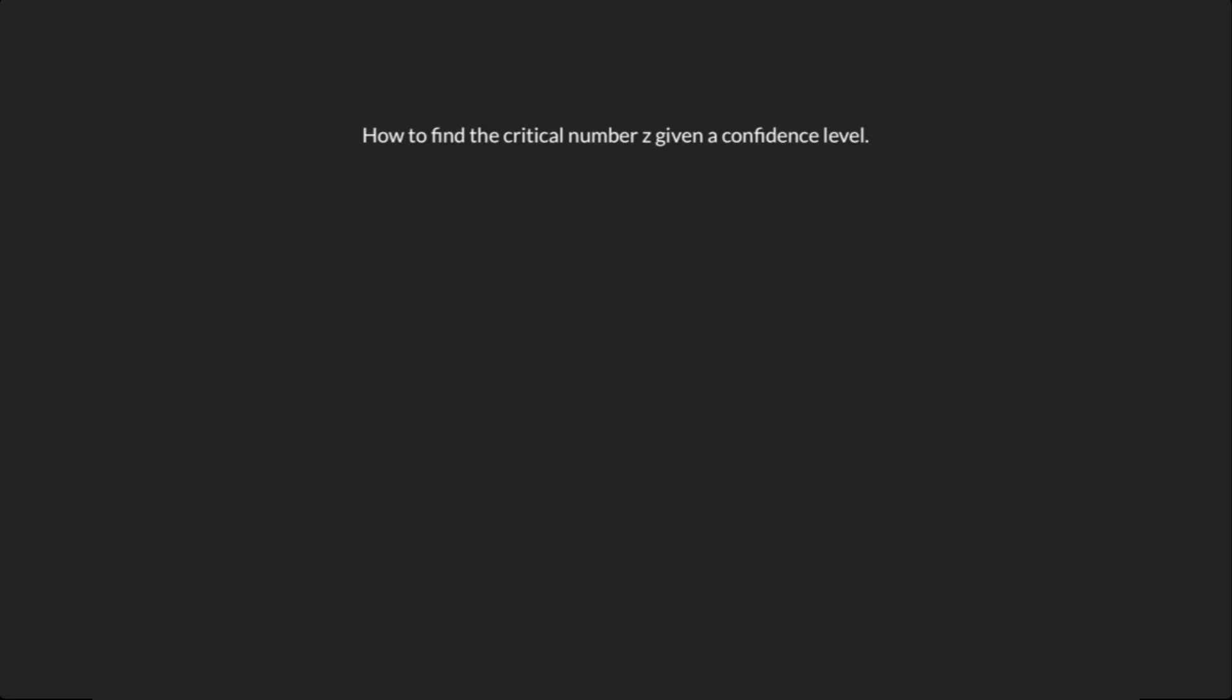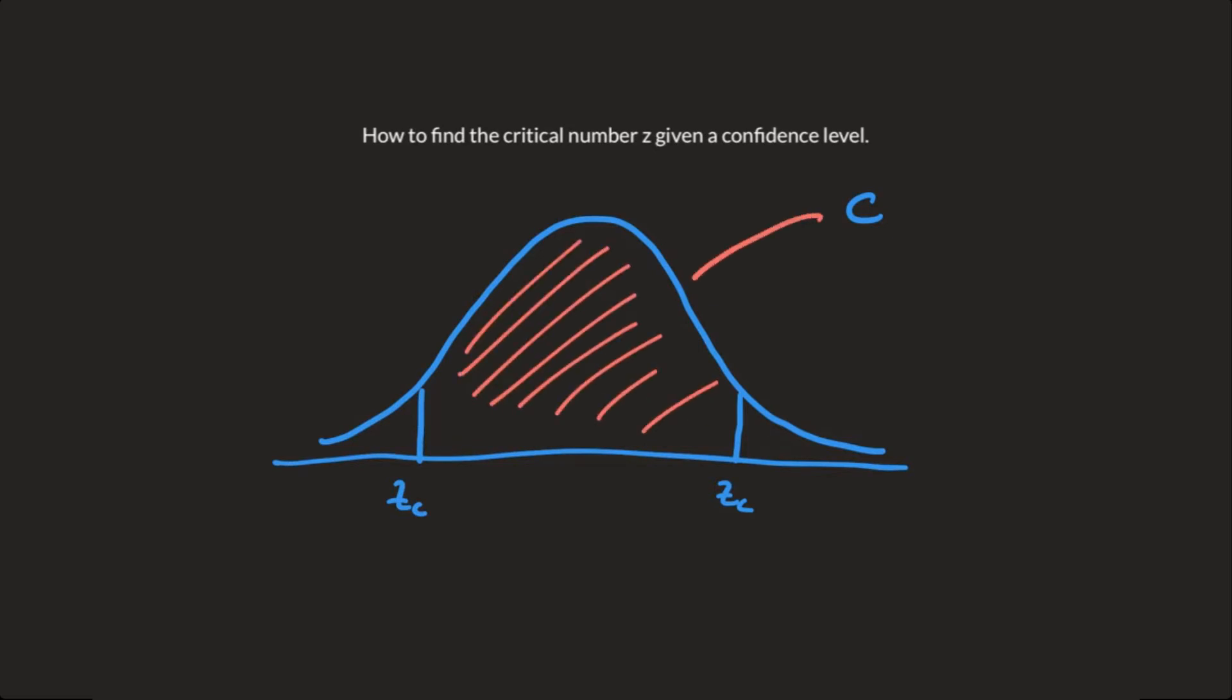Let's take a look at a normal curve. Now let's say you're given a confidence level c. So what's happening is, on this normal curve, you're going to have two different endpoints. Call that zc. And in here, this is going to be the area that's given to you, and that's your confidence number.